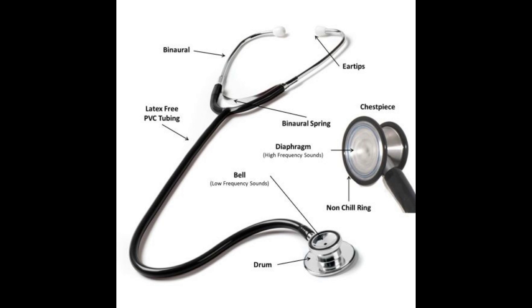The second type is an electronic stethoscope, which has different subcategories. The first is an amplifying stethoscope — a battery-operated electronic stethoscope specifically designed to amplify body sounds. The second is a digitizing or digital stethoscope, which converts acoustic sound to an electrical or digital signal that can be amplified for optimal listening.